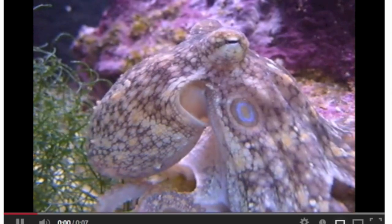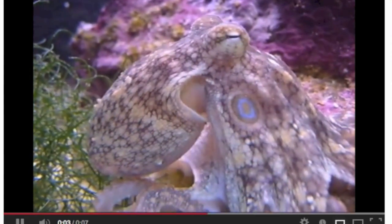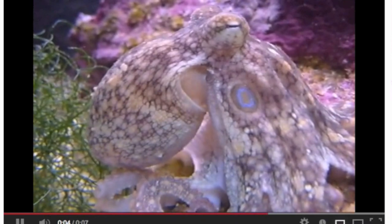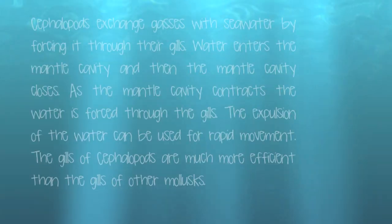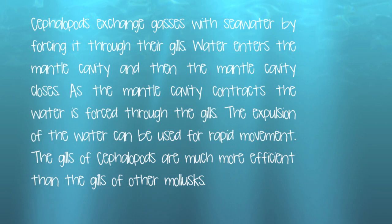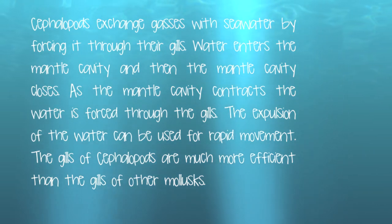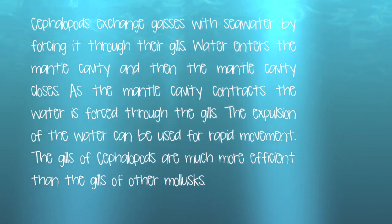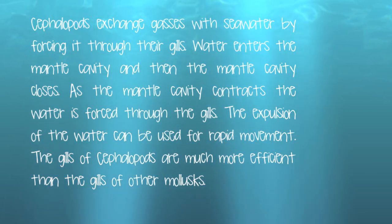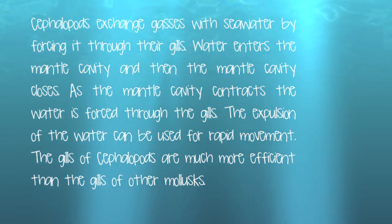Cephalopods exchange gases with seawater by forcing it through their gills. Water enters the mantle cavity, and then the mantle cavity closes. As the mantle cavity contracts, the water is forced through the gills. The expulsion of the water can be used for rapid movement. The gills of cephalopods are much more efficient than the gills of other mollusks.